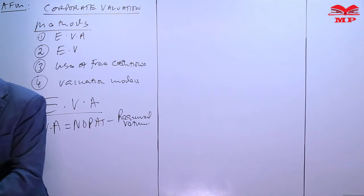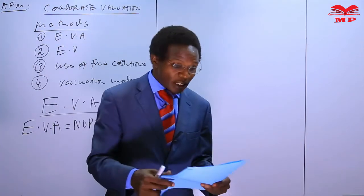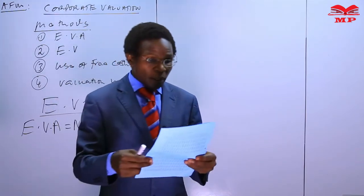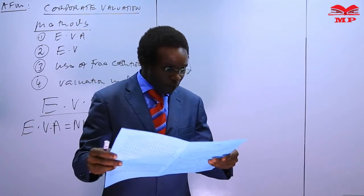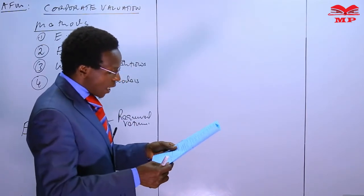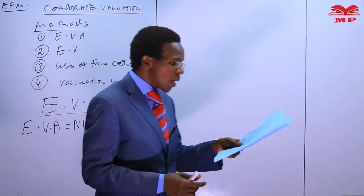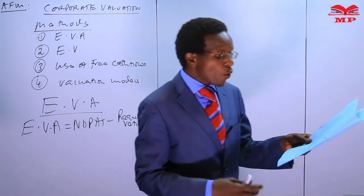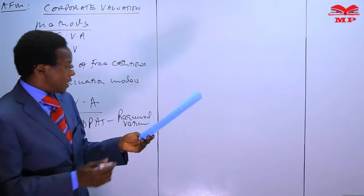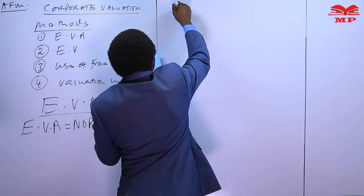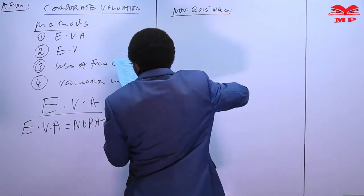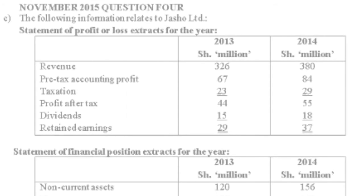As I was perusing our files, we noticed there is a question in November 2015, Question Four — specifically Question Four B and C. Remember, Question Four B we have already done, where we were talking about the advantages and disadvantages of EVA. Now we want to look at Question Four C — November 2015, Question Four C.